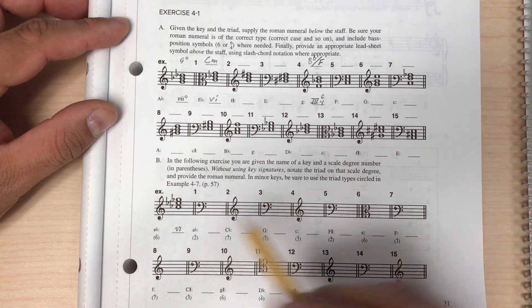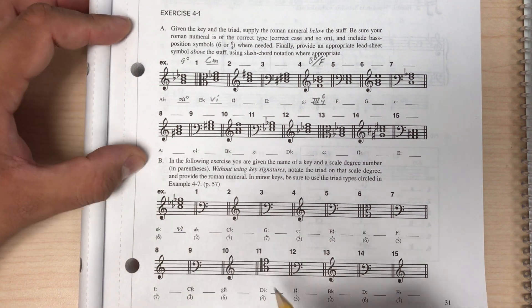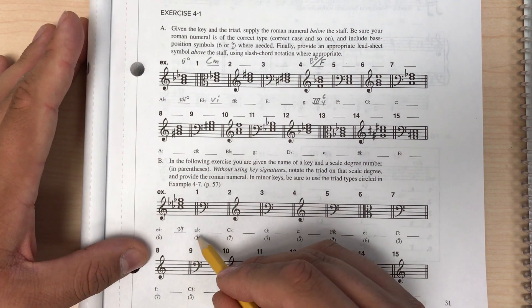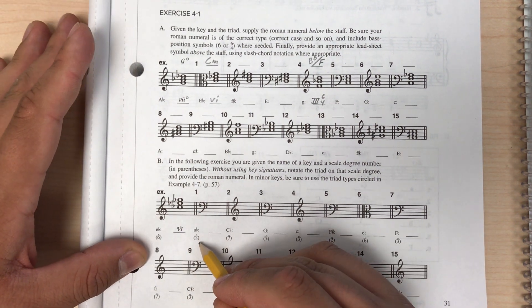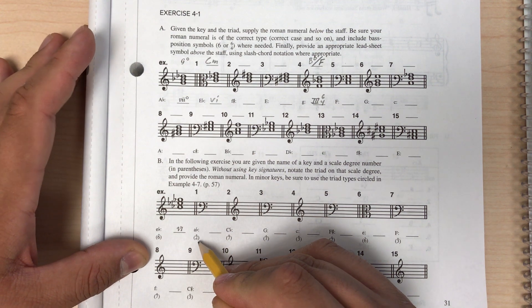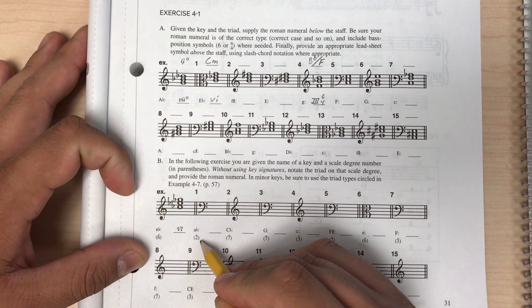This is exercise 4-1 part B. In this part of the homework we are given a key and we're given a scale degree which will be the root of a triad that we're spelling.